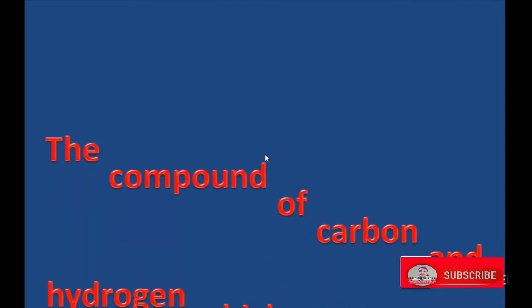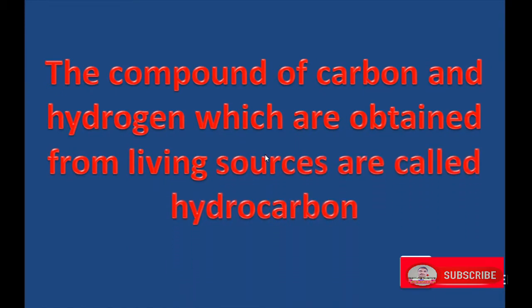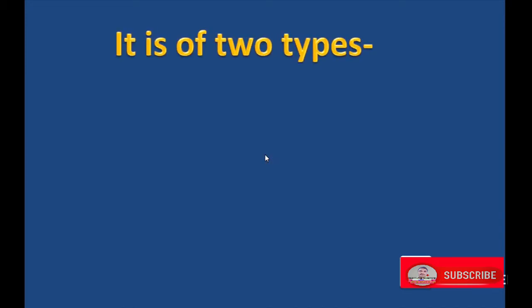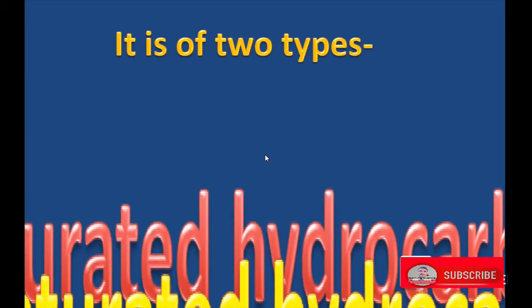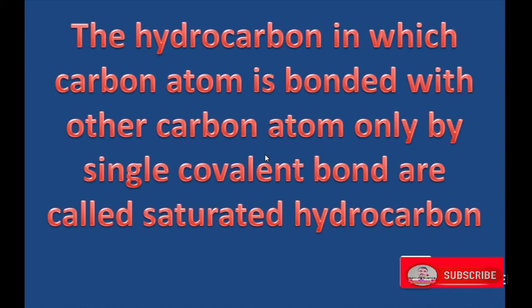The compound of carbon and hydrogen which are obtained from living sources are called hydrocarbon. It is of two types: saturated hydrocarbon and unsaturated hydrocarbon. The hydrocarbon in which carbon atom is bonded with other carbon atoms only by single covalent bond is called saturated hydrocarbon. Example: alkane.